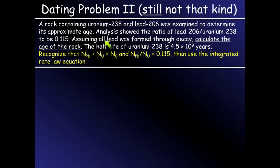Okay, here's another problem. A rock containing uranium-238 and lead-206 was examined to determine its approximate age. Analysis showed the ratio of lead-206 to uranium-238 to be 0.115. Assuming all lead was formed through decay, calculate the age of the rock.